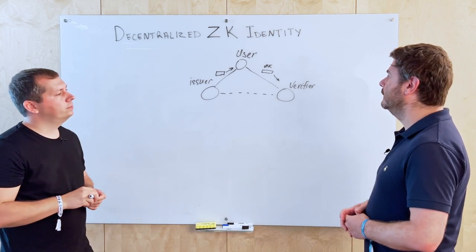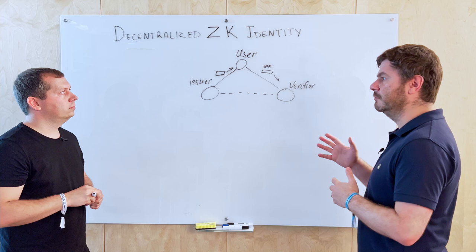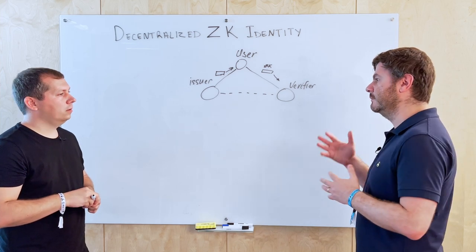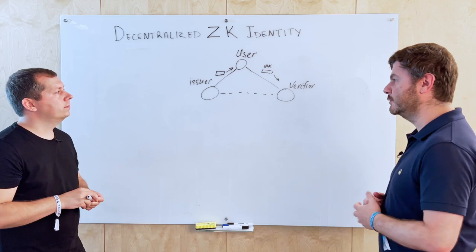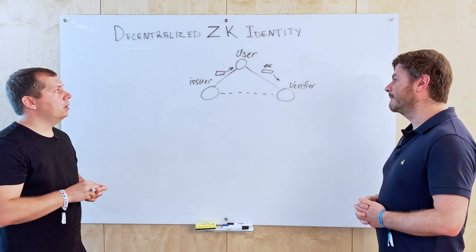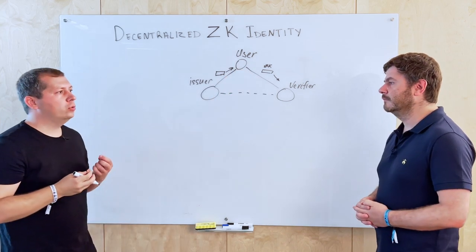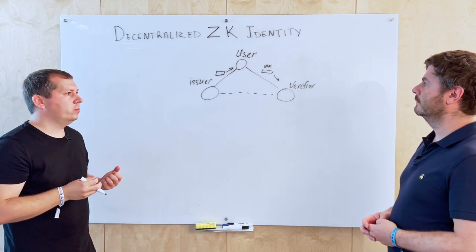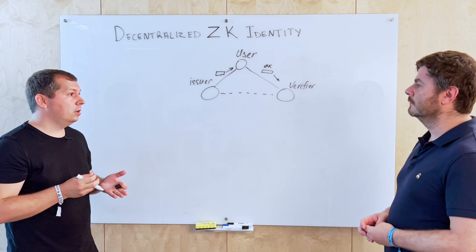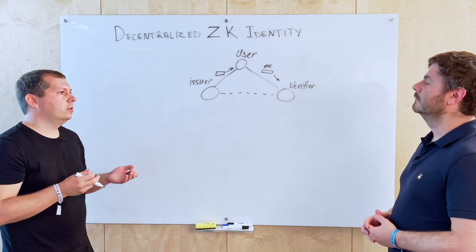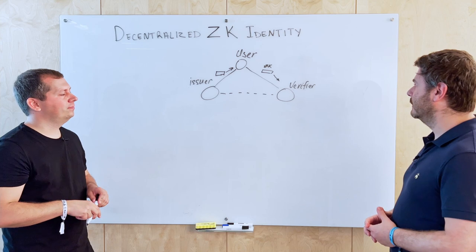Identity doesn't have to belong to a physical person — it could be anything. A user's identity could belong to a natural person, or it could be a room, a city, an organization, or even just a pen.